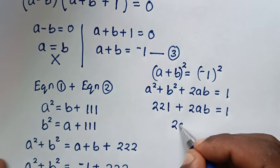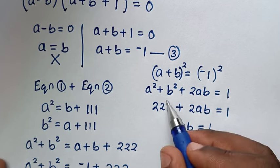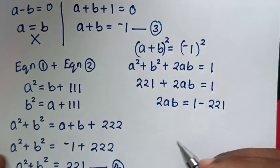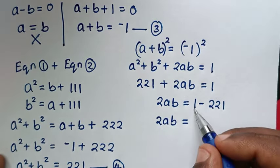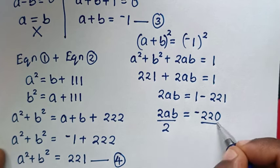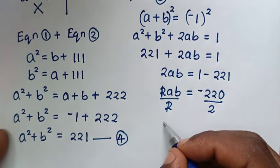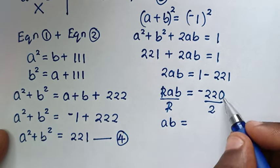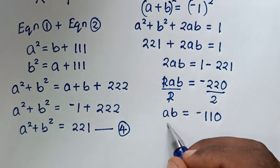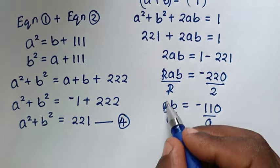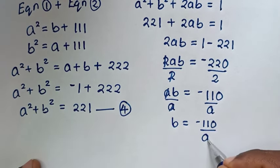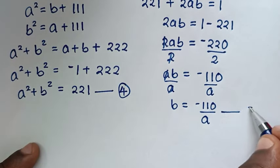Then 2ab equals 1 minus 221, which is negative 220. Dividing both sides by 2 gives ab equals negative 110. Making b the subject by dividing both sides by a gives b equals negative 110 over a. We call this equation 5.